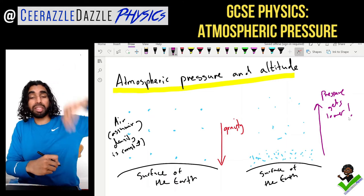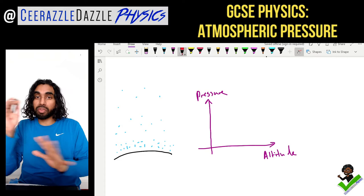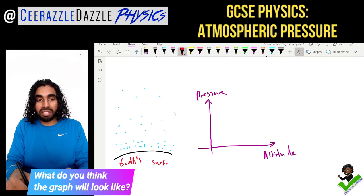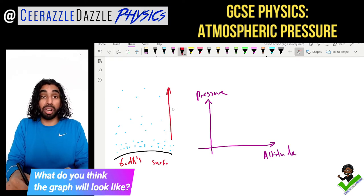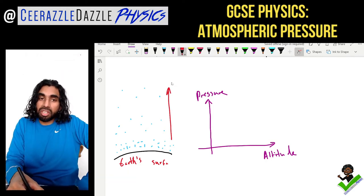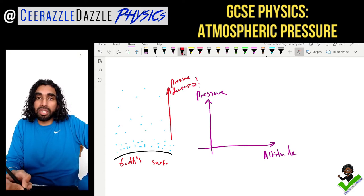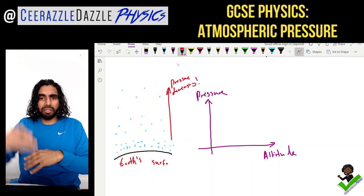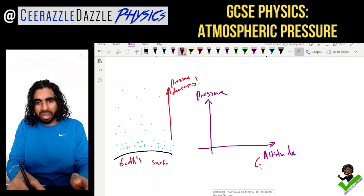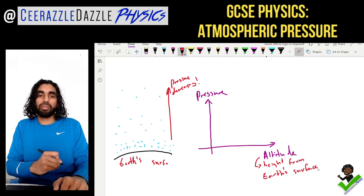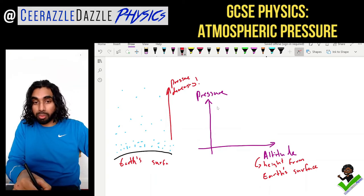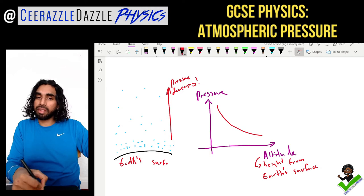Let's tie it all together with a graph. Here is the earth's surface, and as the higher up you go, the pressure gets lower. Plotting a graph of pressure versus altitude — where altitude simply means height from the earth's surface — we can clearly see that the further you are away from the earth's surface, the pressure gets lower.